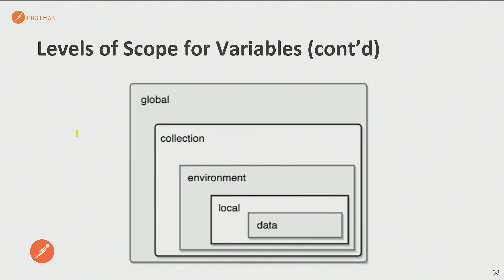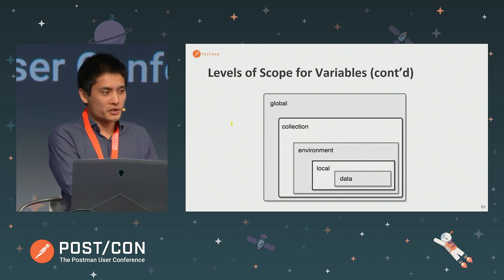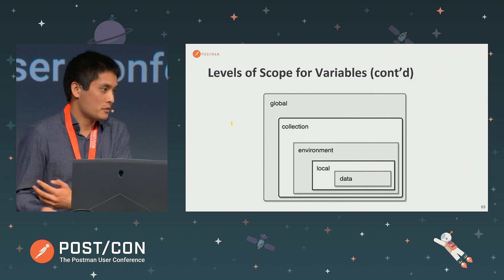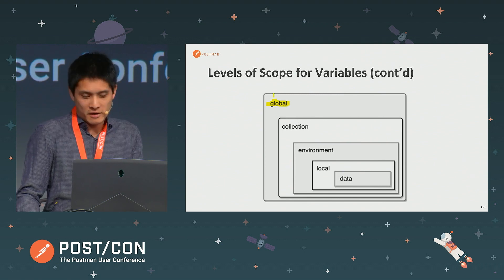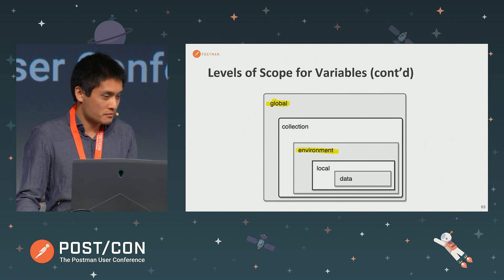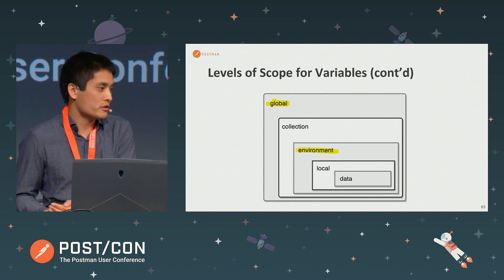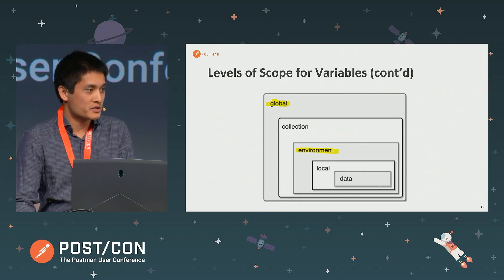This diagram illustrates those five levels of scope and which level takes precedence. Postman resolves variables by going from the broadest to the narrowest scope. So if I have a variable defined at the global level and also the same variable defined in my environment, Postman will use the environment value because that is the narrower scope. The narrower scope always takes precedence over the broader scope.